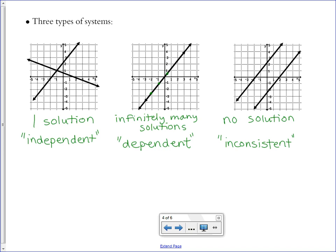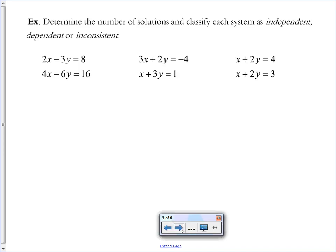So let's see on the next slide how we will be asked to use these words. We're given three systems and asked to determine the number of solutions and how we would classify them as independent, dependent, or inconsistent. So I'm going to do this by not even graphing them. I'm just going to isolate y, get them in slope-intercept form, and compare the two equations.